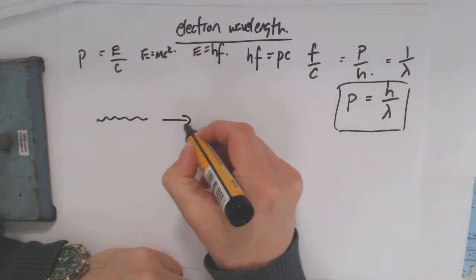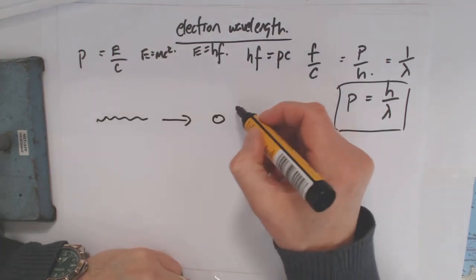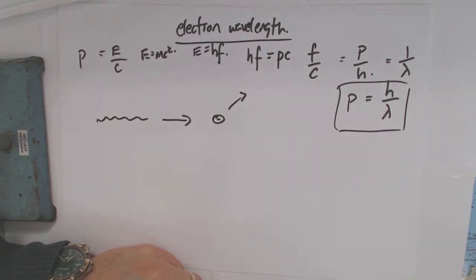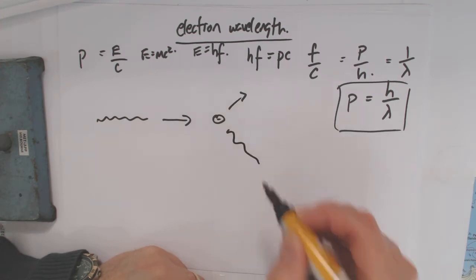If you've got a photon coming along, it's an electron. The electron gets knocked off over there, right? That's your little electron. Some of your momentum's gone to the electron. That means your photon scattered this way.